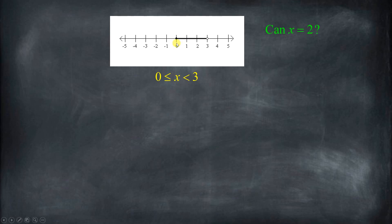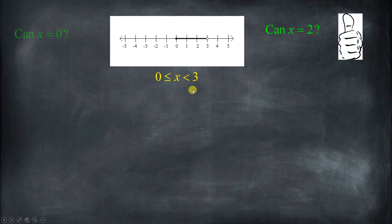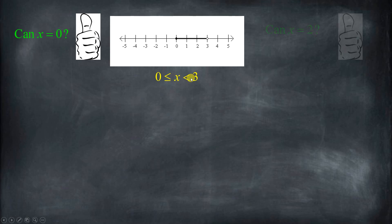So first of all, can x equal 2 for this inequality? Well, x equals 2 is on the graph, and 0 is less than or equal to 2 — that's true — and 2 is less than 3, so absolutely it can. Now what about the endpoint 0? Can x equal 0? Yes, because 0 has a solid dot, and it's less than or equal to itself, and it's also less than 3.